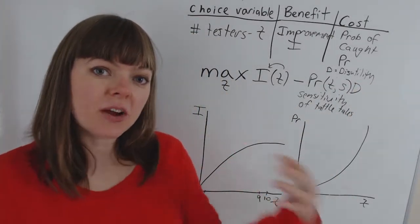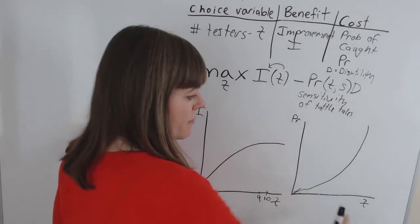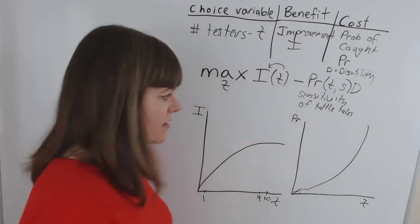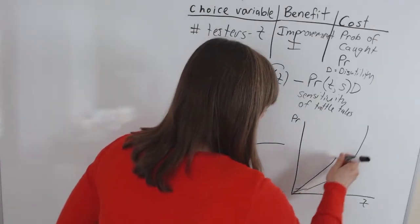And we can actually check what that looks like on the graph by looking at our graph of the probability of being caught against the number of tattletales. And we can see that if we have highly sensitive tattletales, that's going to rotate this graph up.